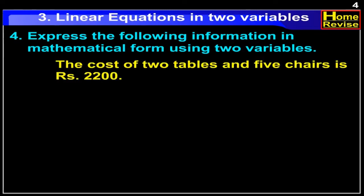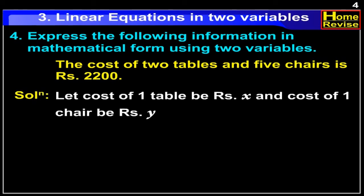Express the following information in mathematical form using two variables. The cost of 2 tables and 5 chairs is Rs. 2200. Solution: Let the cost of one table be Rs. x and the cost of one chair be Rs. y. Then 2x plus 5y is equal to 2200.